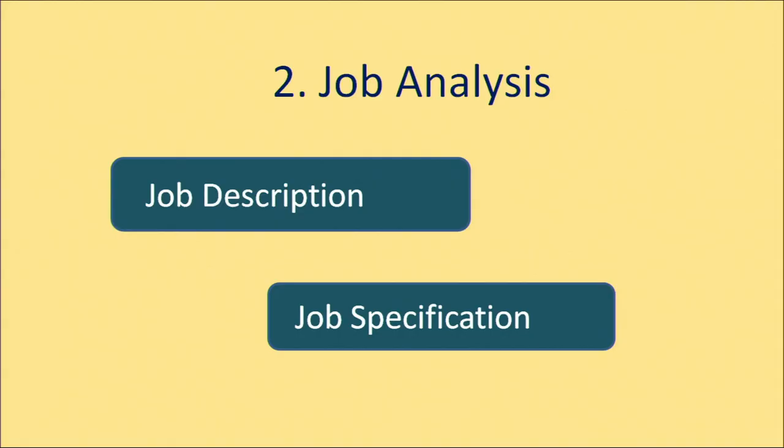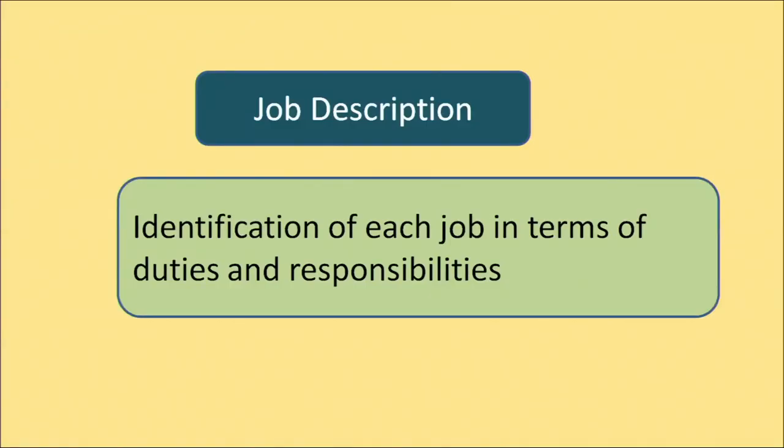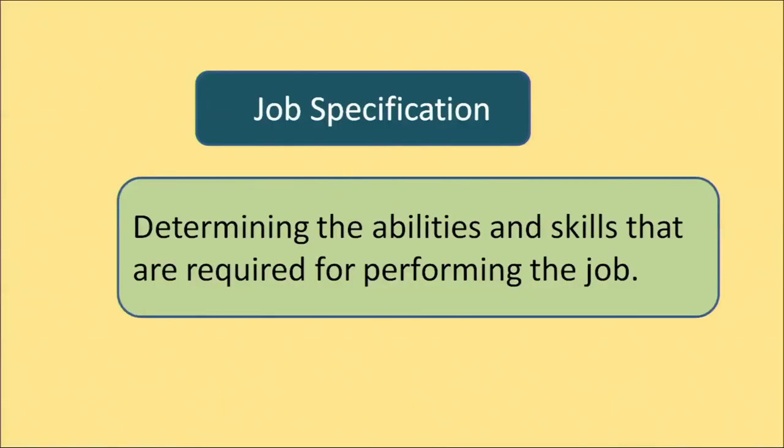The next step is job analysis, which involves two factors. Number one is job description, and another one is job specification. Job description means identification of each job in terms of duties and responsibilities — it is the process where the human resource manager identifies the roles and responsibilities a person is supposed to perform. Job specification means determination of the abilities and skills required for performing the job — it identifies what kind of qualifications and abilities are required to perform a particular job.